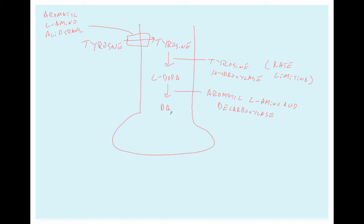The dopamine is then imported into vesicles, where it's converted into norepinephrine, in a reaction that's catalyzed by dopamine beta-hydroxylase. These vesicles can then fuse with the presynaptic membrane and release norepinephrine.